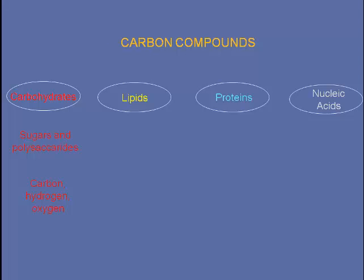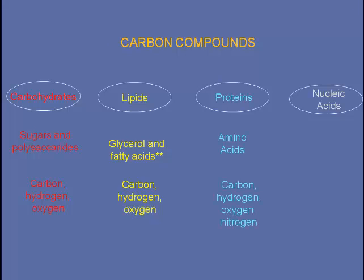Carbohydrates include sugars and polysaccharides and are made up of carbon, hydrogen, and oxygen. Lipids include glycerol and fatty acids, phospholipids and steroids, and are made up of carbon, hydrogen, oxygen, and sometimes phosphorous. Proteins are made up of amino acids and contain carbon, hydrogen, oxygen, and nitrogen. Nucleic acids are made up of nucleotides that contain carbon, hydrogen, oxygen, phosphorus, and nitrogen.